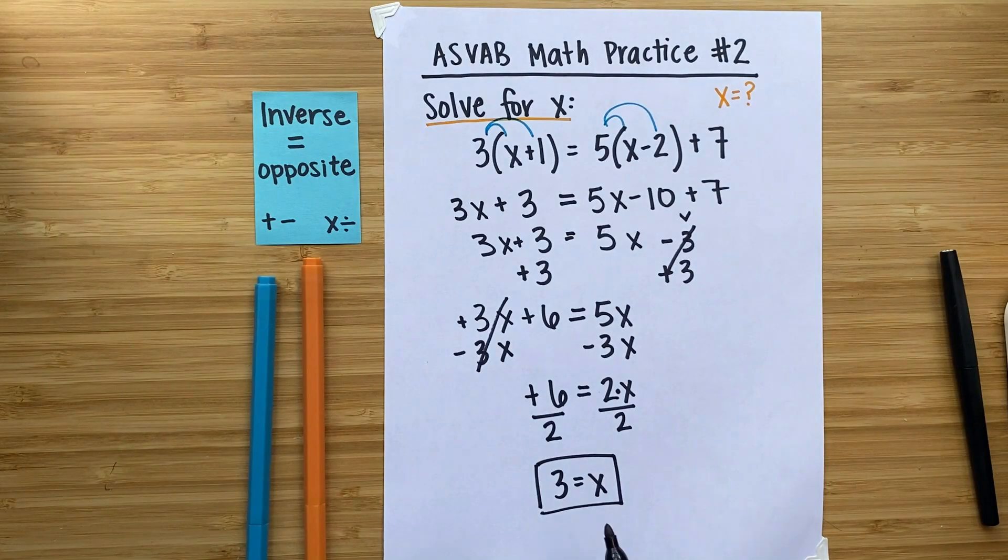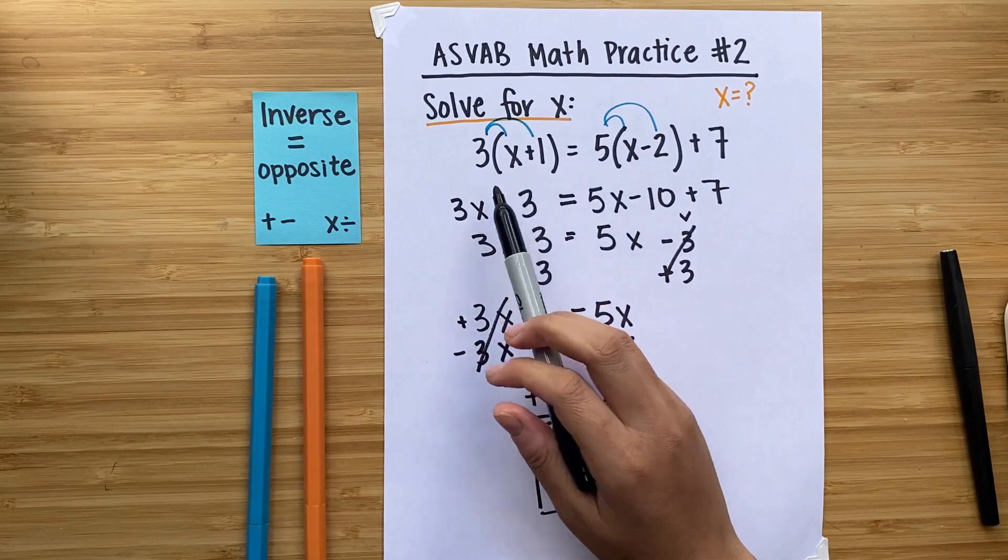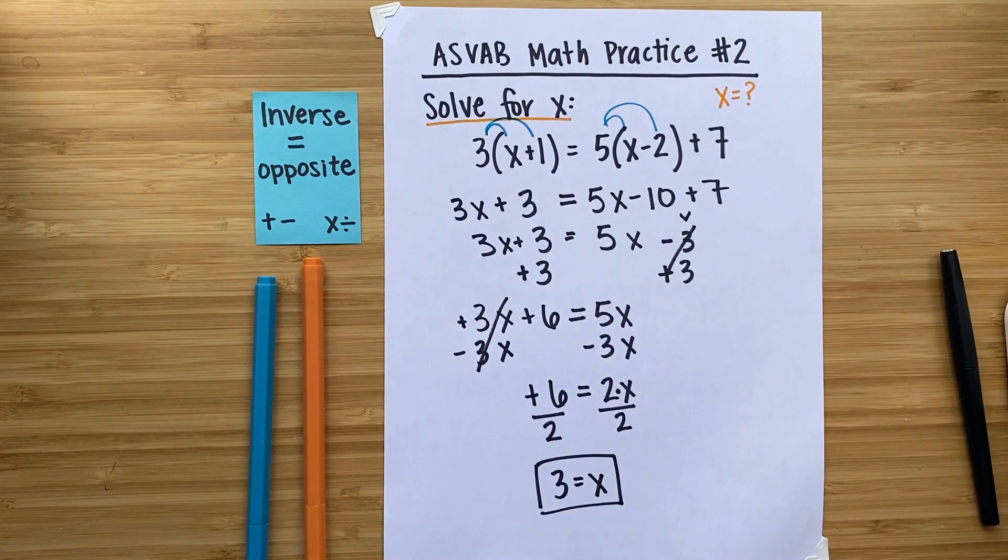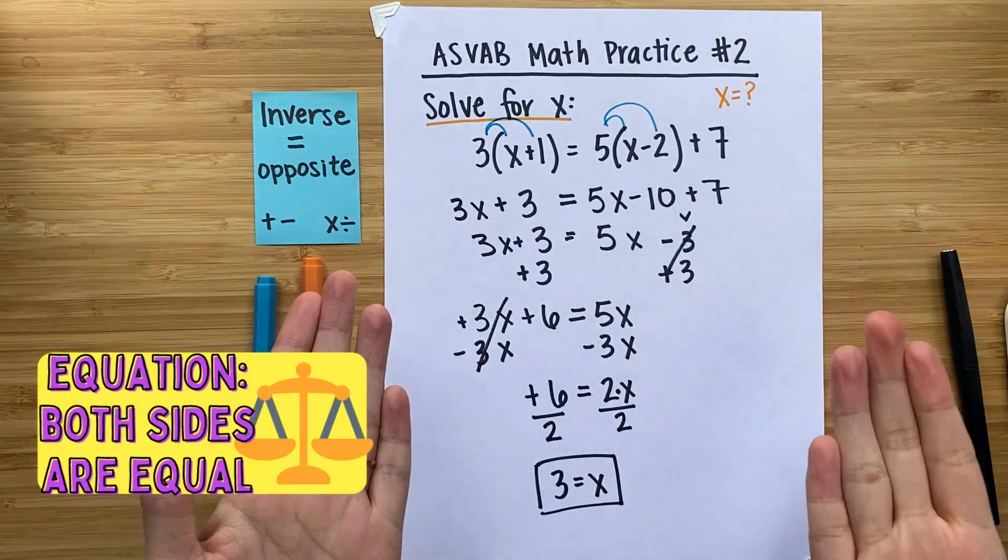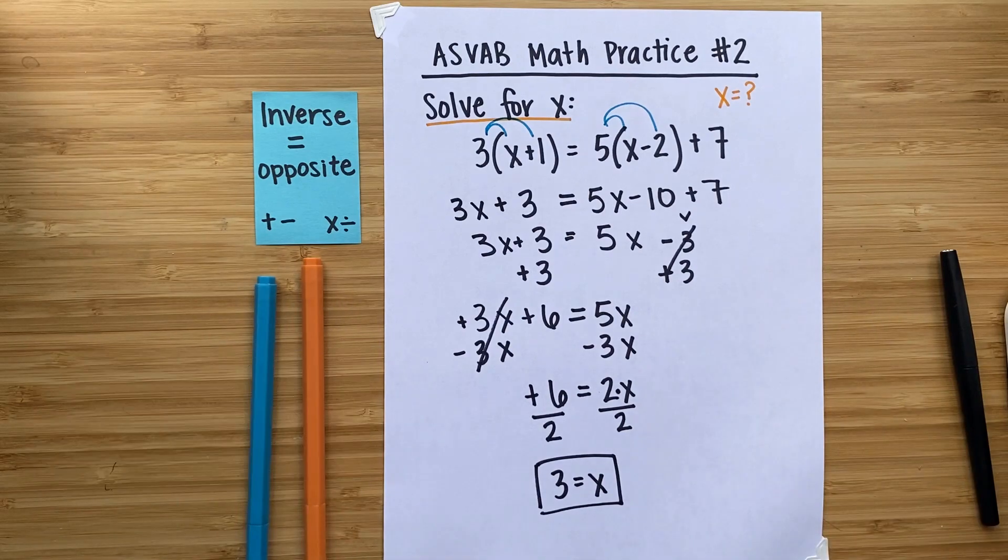You could check this by taking a 3, substituting it in for x, solving the whole problem and seeing if you get two numbers that are the same, both sides being equal. Next, I'll show you some practice problems so that you can try out this skill on your own.